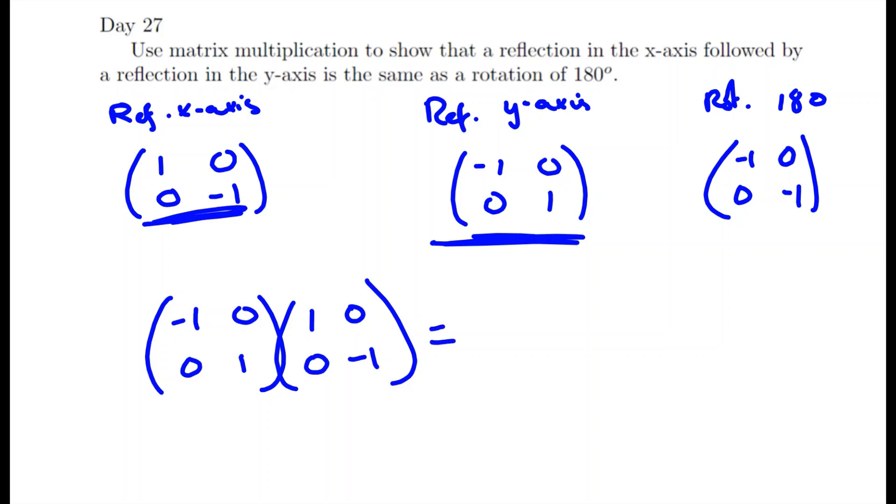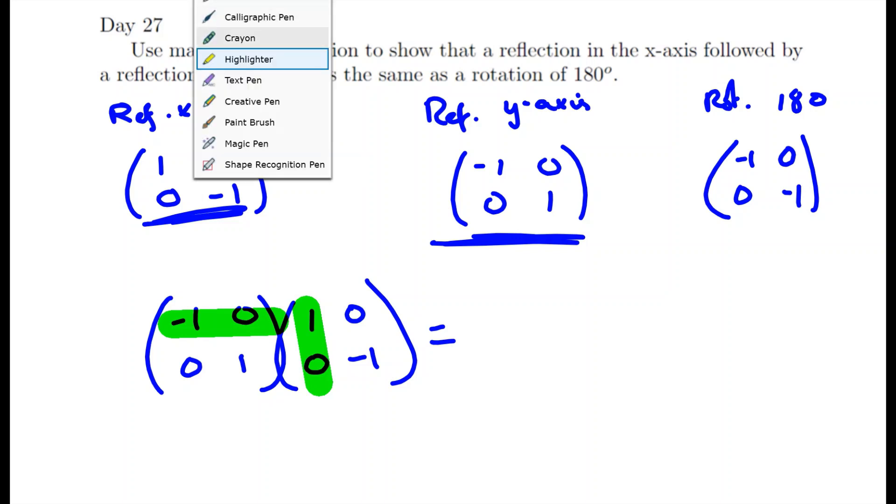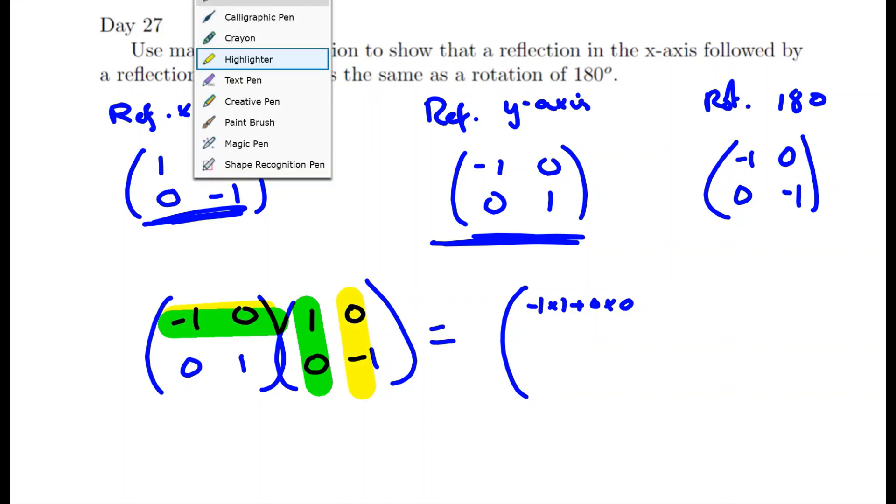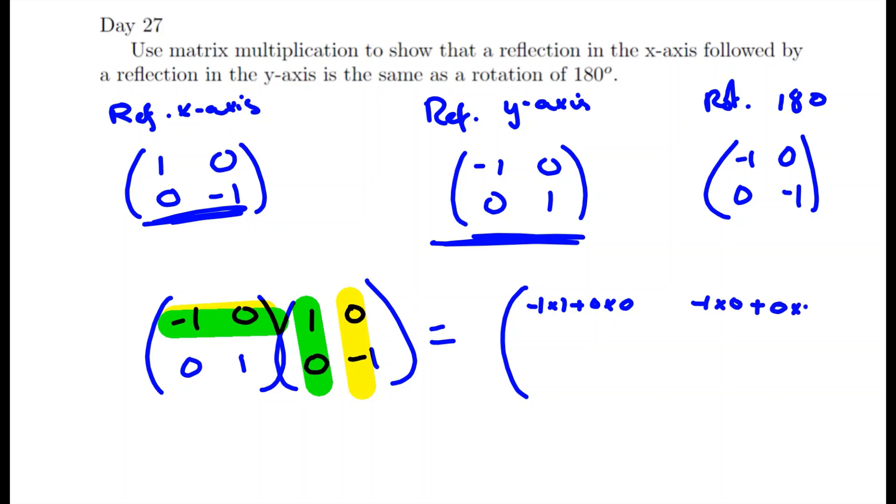So let's work that out. We're going to do top row by left-hand column for top left. So we're going to have negative 1 times 1 plus 0 times 0. We want top right, so we're going to do top times by right. So we're going to have negative 1 times 0 plus 0 times negative 1.